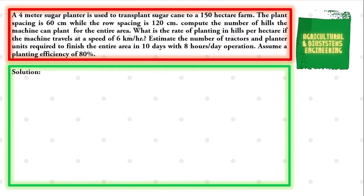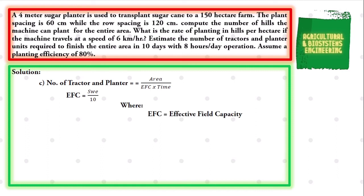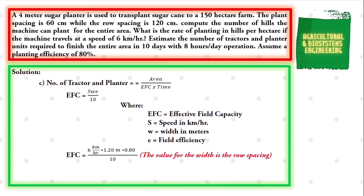Finally, to solve for the number of tractors and planters, we use the formula: Number = A / (EFC × Time). However, we first need to solve for the EFC (effective field capacity) using the formula: EFC = (S × W × E) / 10, where S is speed in km/h, W is width in meters, and E is field efficiency. Note that we always use the row spacing for width when solving EFC. Substituting: EFC = (6 × 1.20 × 0.80) / 10. We get an EFC of 0.576 hectares per hour.